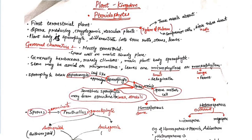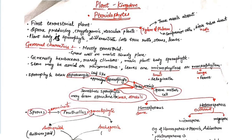General characteristics: pteridophytes are mostly terrestrial, found in moist and shady places — wet areas and sometimes dry areas. They are herbaceous, rarely climbers, with a common soft stem — not strong or woody.